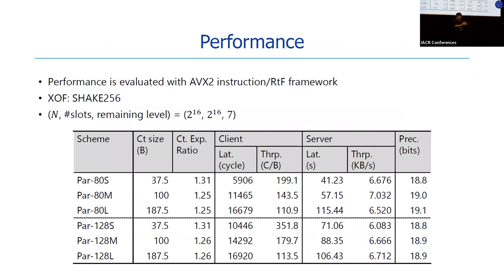Performance is evaluated with AVX2 instructions for client-side encryption and the RTF framework implemented in the Lattigo library for server-side encryption. We chose SHAKE256 as the extendable output function and fixed the RLWE dimension, number of slots, and remaining level. You can see the ciphertext size, ciphertext expansion ratio, client and server performance, and precision. Larger block size gives larger throughput; smaller block size gives smaller latency, except for the 80-bit security parameters where the number of rounds does not decrease for larger block sizes.